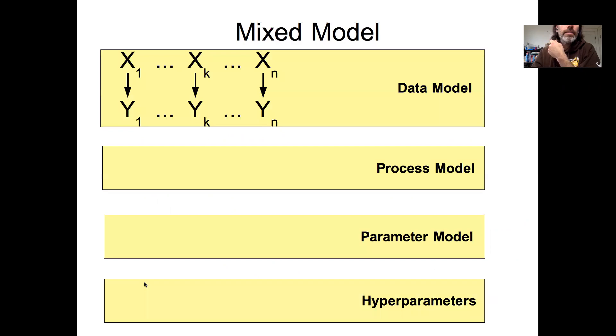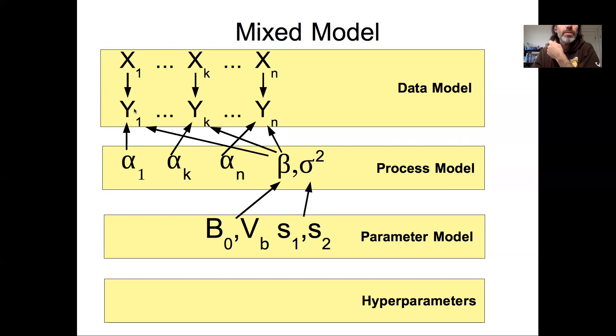Looking at this graphically, we might have, instead of just data from n different sources, we might have combined x and y data from n different sources. Those again could be sites or years or blocks or something like that. We have our fixed effects model describing that relationship, much as we had previously in earlier lectures, with priors on those.